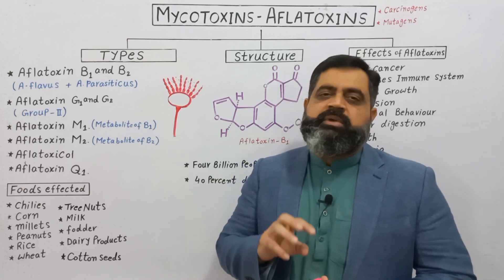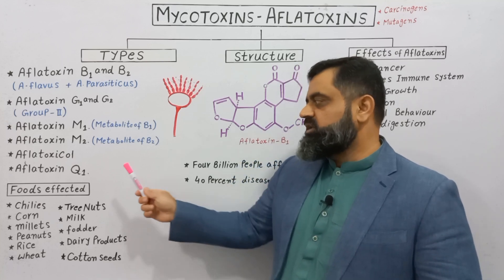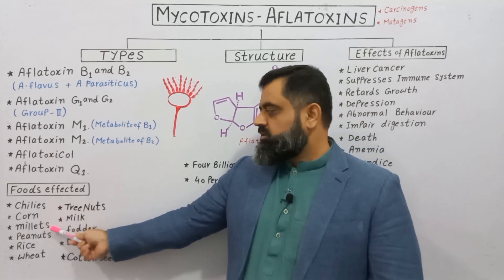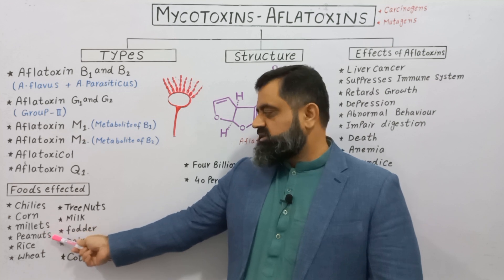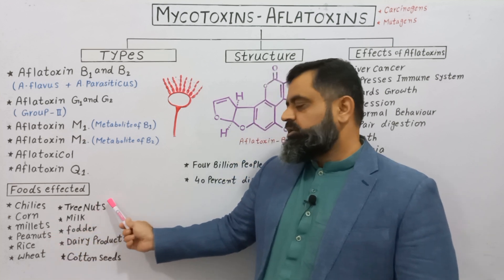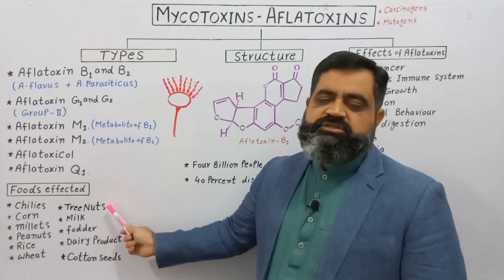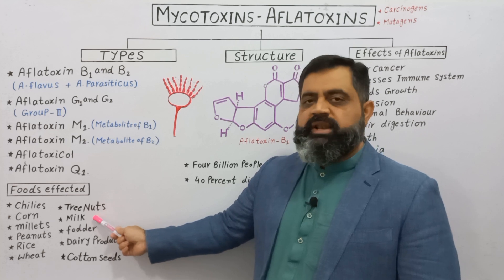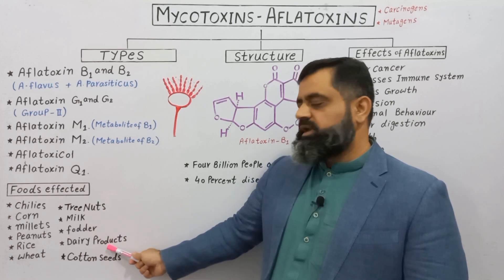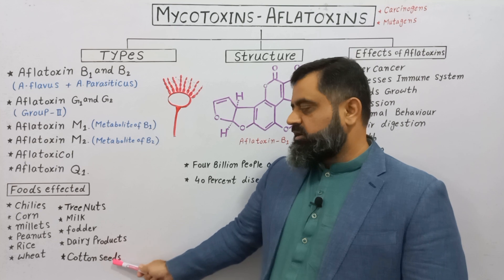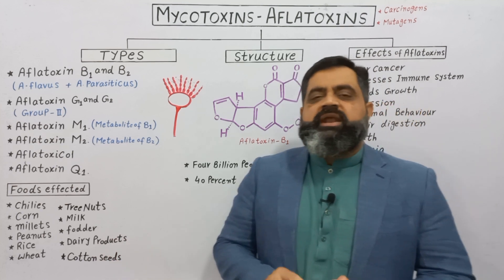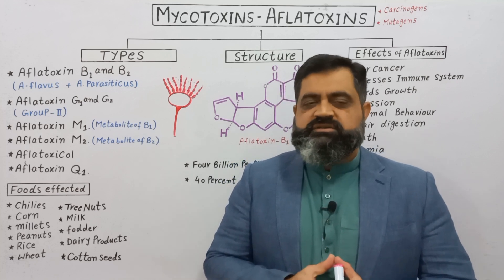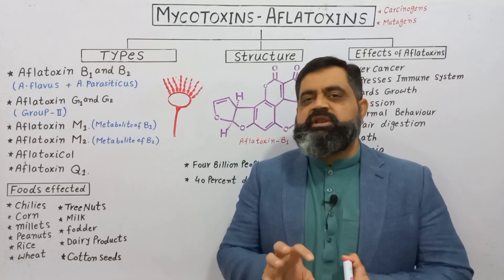There are many foods affected by aflatoxins, including chillies, corn, maize, millets, peanuts, rice, wheat, tree nuts such as almonds, cashew nuts, walnuts, and pistachio, as well as milk, fodder, dairy products, cotton seeds, and sesame seeds. There are many different varieties of plants and seeds that can be contaminated with this fungus.